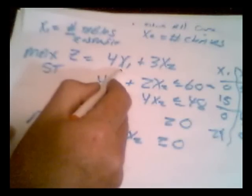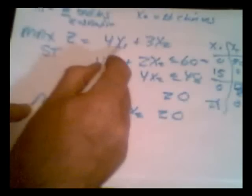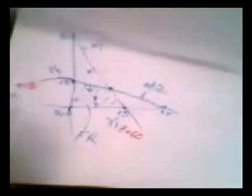This point here is 15 tables and zero chairs. So if we plug 15, zero, 15 and zero into the objective function, we see that that would provide us with a profit of 60. Likewise, this solution right here, zero tables and 12 chairs, when we plug that into the objective function, zero and 12, we get a Z of 36. So that's clearly not the optimal. This one might be.